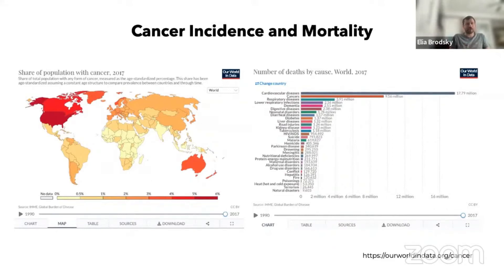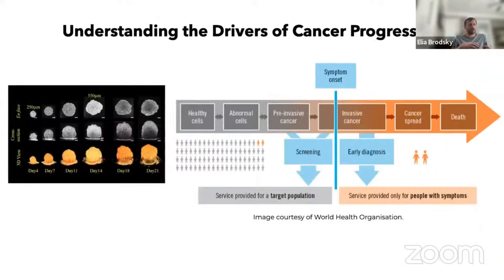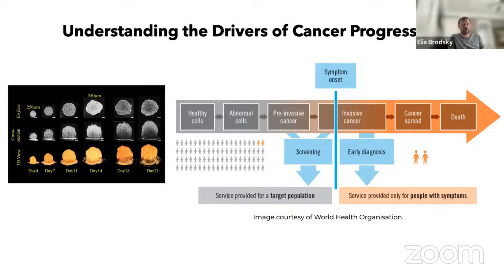To understand cancer progression, we need to understand that healthy cells, as they develop, can lose restriction mechanisms, causing cells with damaged DNA and other unwanted processes to proliferate uncontrollably and spread throughout the body. When we speak about stages of cancer development, we speak about the onset of cancer, when these cells start to appear and form a tumor, eventually spreading throughout the body — what we call metastasis.